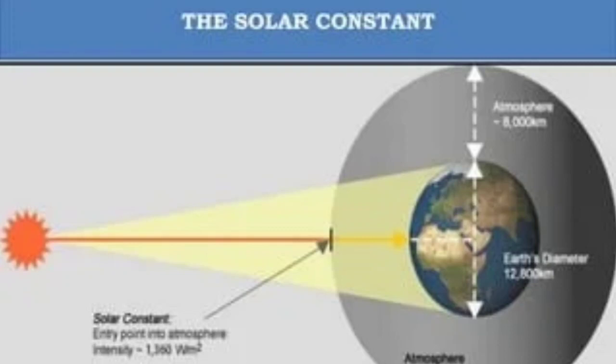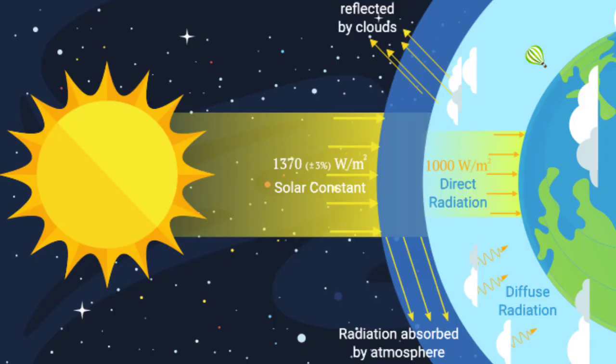As the earth is of geoid shape, or is almost spherical in shape, the sun's rays fall obliquely or tangentially at the top of the atmosphere, so the earth is able to intercept only a very small part of the solar energy. The amount of energy that the earth receives at the top of the atmosphere is 1.94 calories per square centimeter per minute.